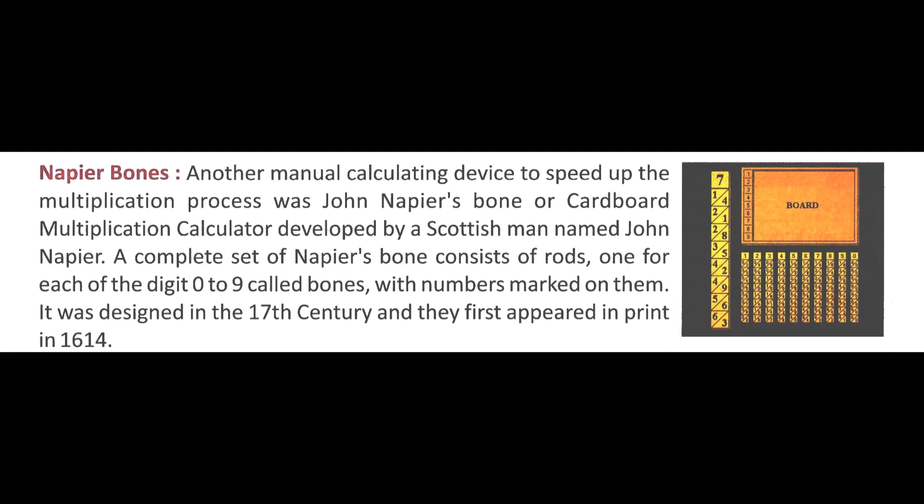Also in the manual era, Napier Bones were invented for fast multiplication. They were invented by a Scottish man named John Napier, and are also known as a cardboard multiplication calculator. Napier Bones consist of rods, and each rod represents digits from 0 to 9, called bones, with numbers marked on them. Napier Bones were designed in the 17th century and appeared in print in 1614.